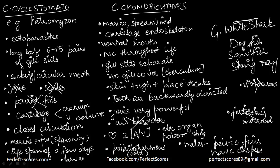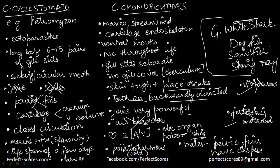To revise class Chondrichthyes: they are marine and streamlined, with cartilage in the endoskeleton. They have a ventral mouth and the notochord is present throughout life. Gill slits are separate with no operculum. The skin is tough with placoid scales modified into backwardly directed teeth. Jaws are powerful. No air bladder. Heart has two chambers — auricle and ventricle. They may have an electric organ or a poison sting. They are cold-blooded or poikilothermous. Males have pelvic fins with claspers; fertilization is internal and they are viviparous. Examples: great white shark, dogfish, sawfish, and stingray.